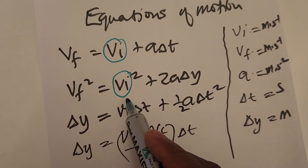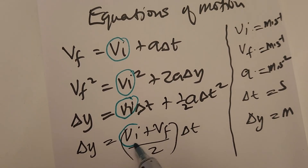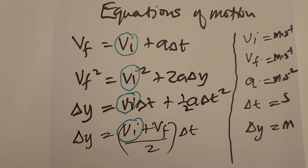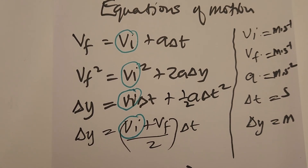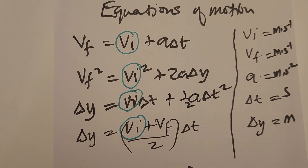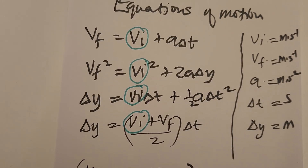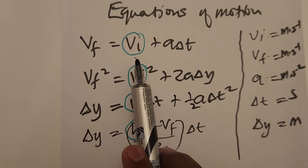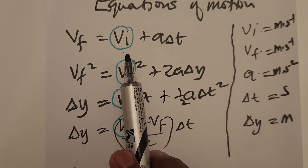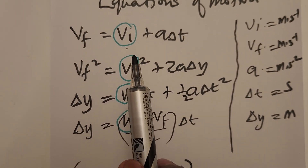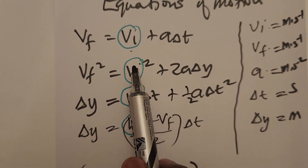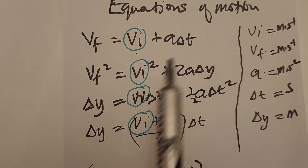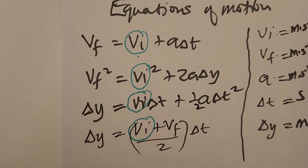Because vi appears in all equations, there is no way to use the equations of motion without vi. It must either be given to you or you must calculate it first — those are the only two conditions.